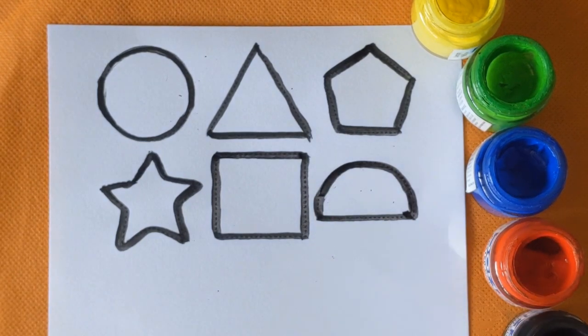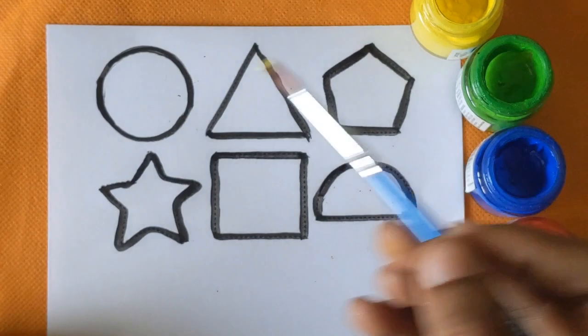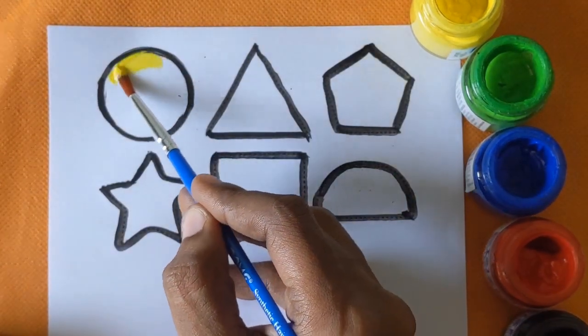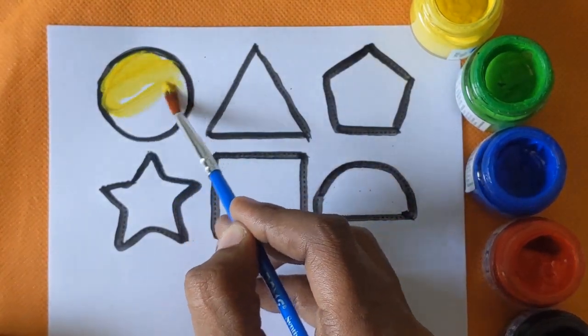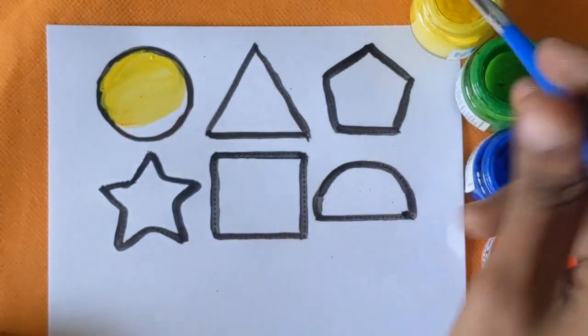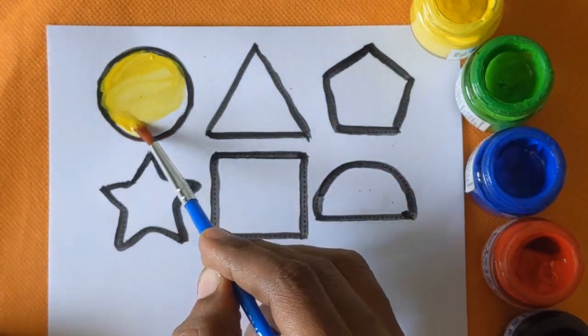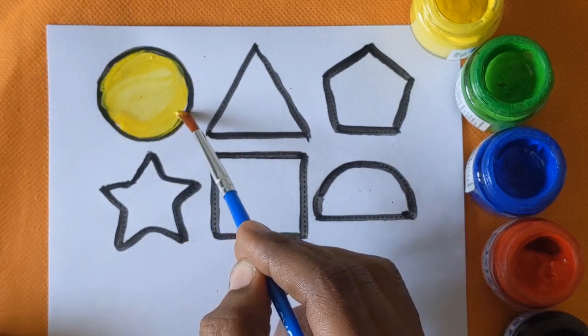Now, let's fill the colors. Which shape is this? This is circle shape with a yellow color.